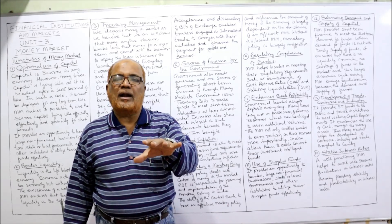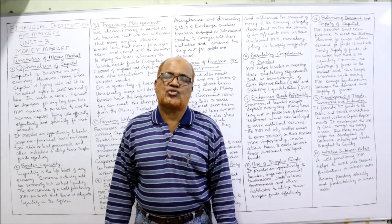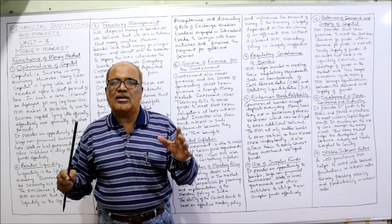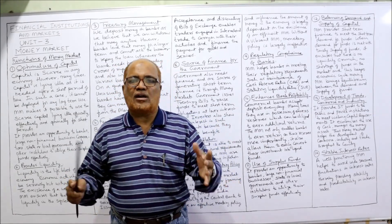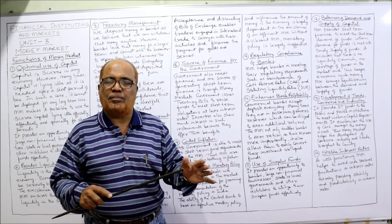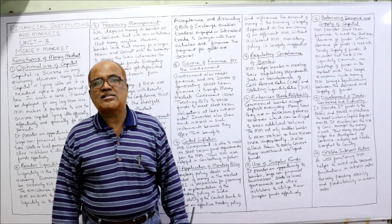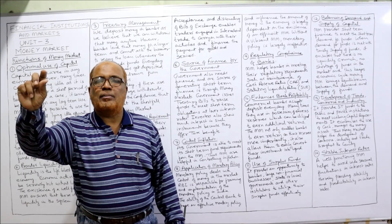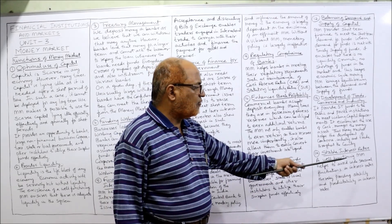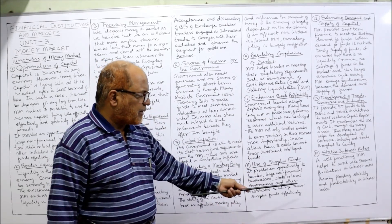The thirteenth function is the development of trade, commerce, and industry. The money market is very helpful for the development of trade, commerce, and industry because every sector requires funds for short-term purposes. The money market supplies short-term funds to any trade, business, commerce, or industry. Finally, the fourteenth function is stable interest rates — a well-functioning money market helps avoid wide seasonal fluctuations in interest rates, thereby providing stability and predictability.